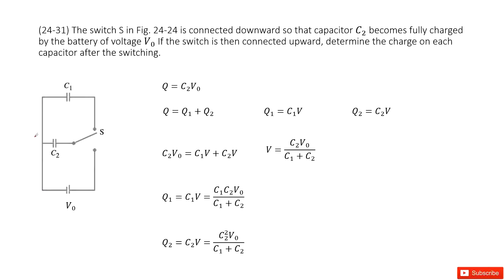So you can see we have this circuit. Initially, we put the switch at the lower end. At the lower end, you can see in this circuit we have a battery and the capacitor C2. This capacitor C2 will become fully charged. The charge stored in C2 we can calculate as C2 times V0.